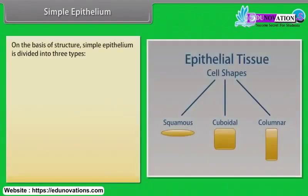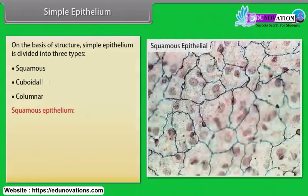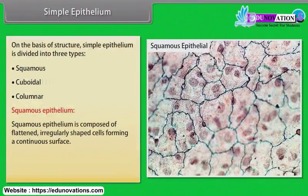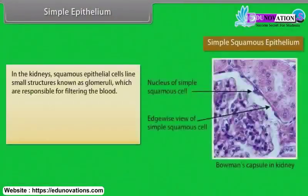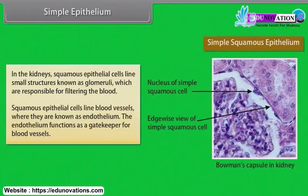On the basis of structure, simple epithelium is further divided into three types. Squamous epithelium is composed of flattened, irregularly shaped cells forming a continuous surface. They form the lining of cavities such as the mouth, blood vessels, heart and lungs, and make up the outer layers of the skin. In the kidneys, squamous epithelial cells line small structures known as glomeruli, which are responsible for filtering the blood. Squamous epithelial cells line blood vessels where they are known as endothelium, which functions as a gatekeeper for blood vessels.